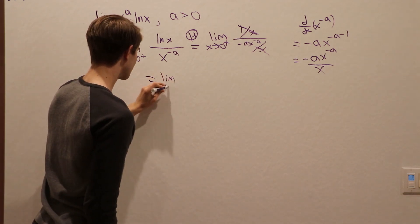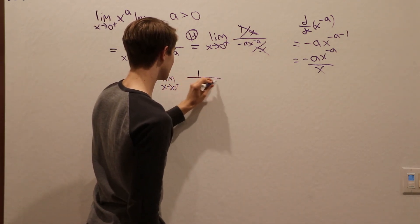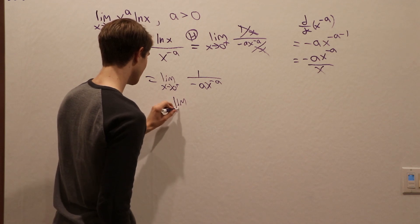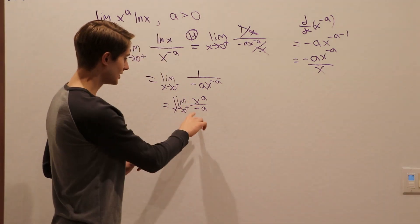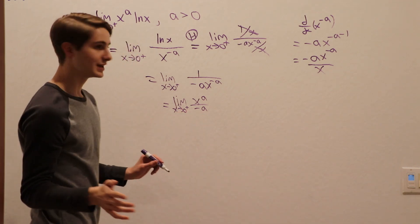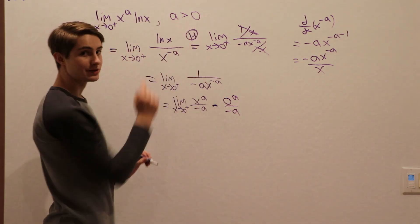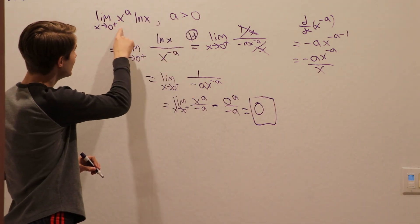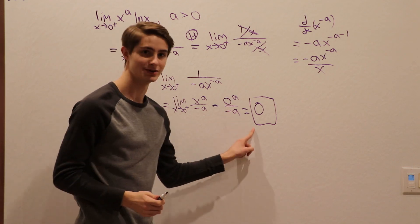That gives us the limit as x approaches 0 from the right of 1 over negative a times x to the negative a. We can bring x to the negative a back to the top, giving us the limit as x approaches 0 from the right of x to the a over negative a. Since a is greater than 0, on the top we have x to the a and on the bottom we have just negative a, which is a constant. We can plug in 0: 0 to the a is just 0, so the answer is 0.